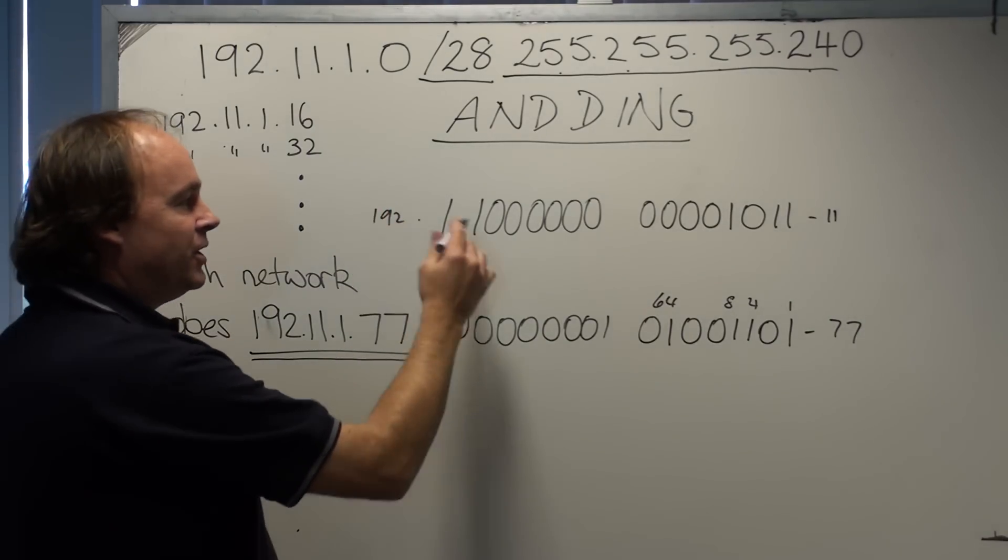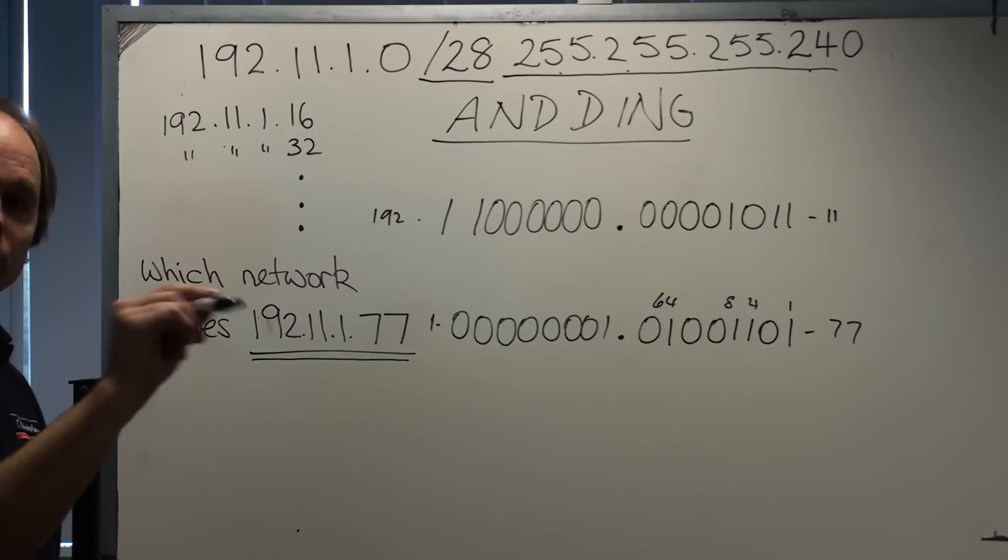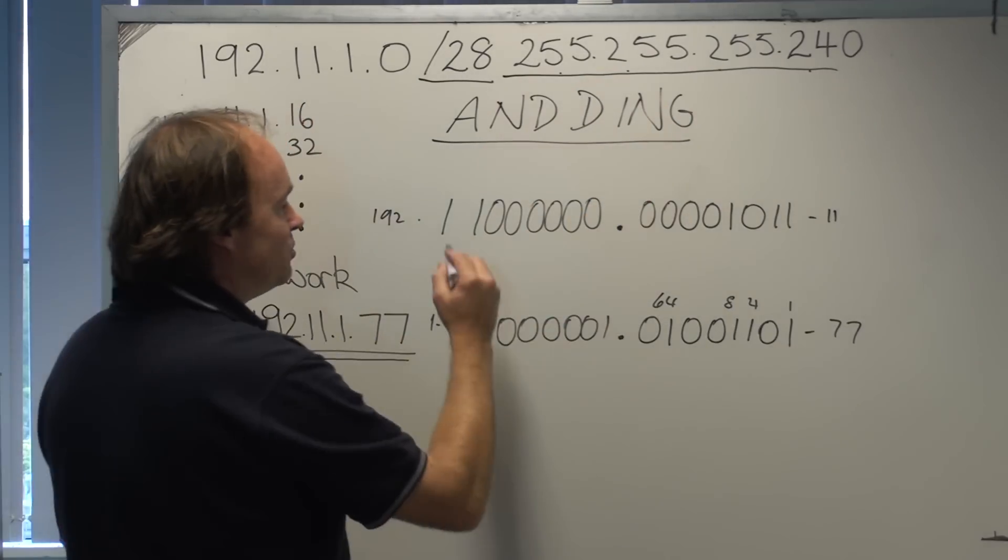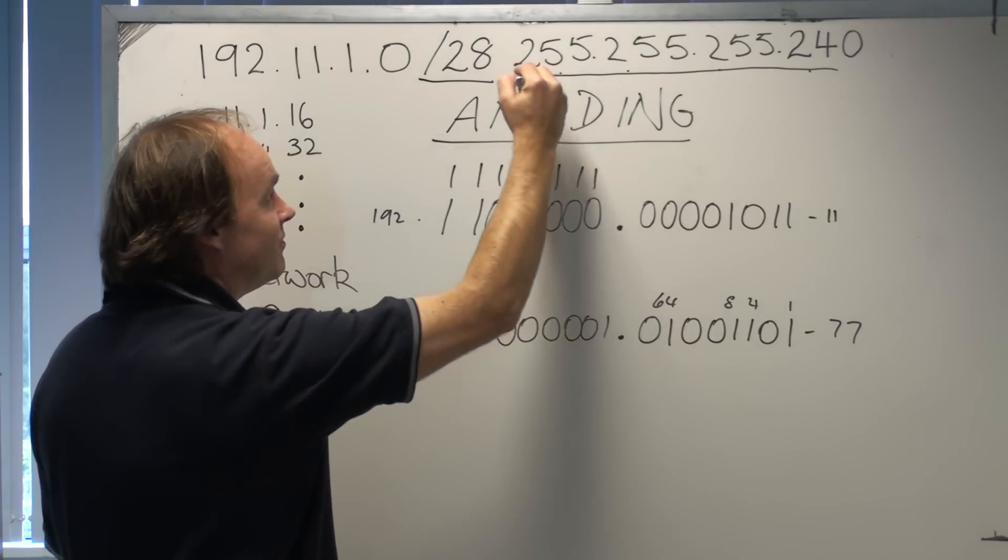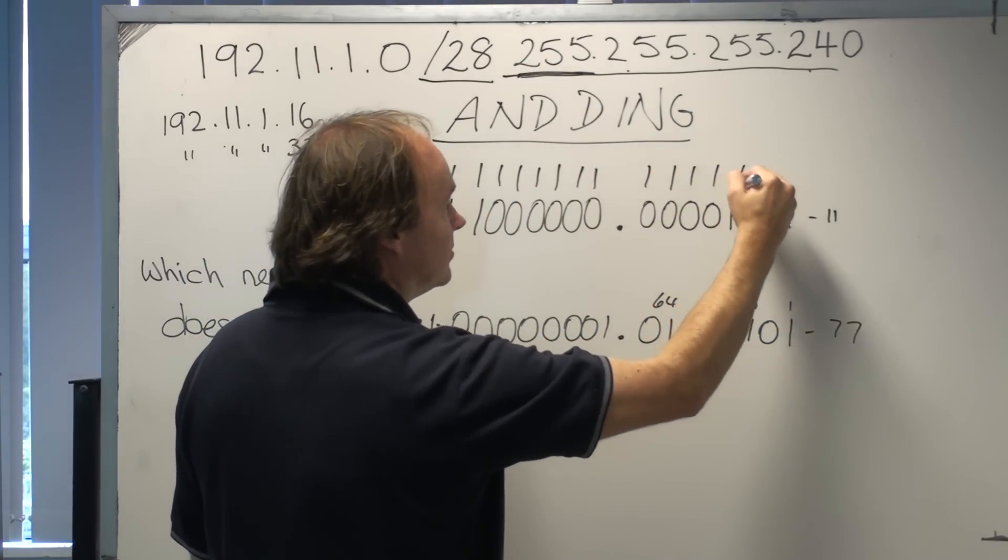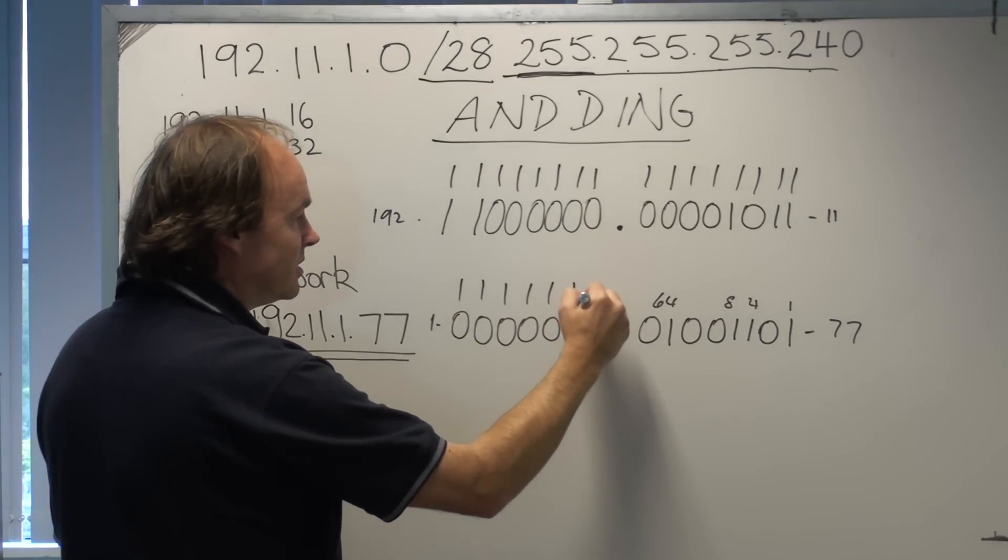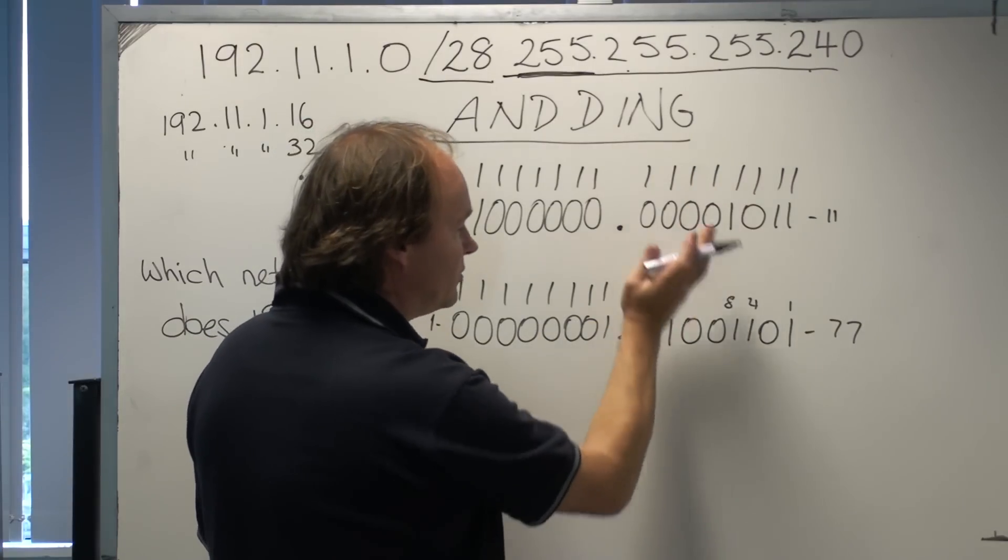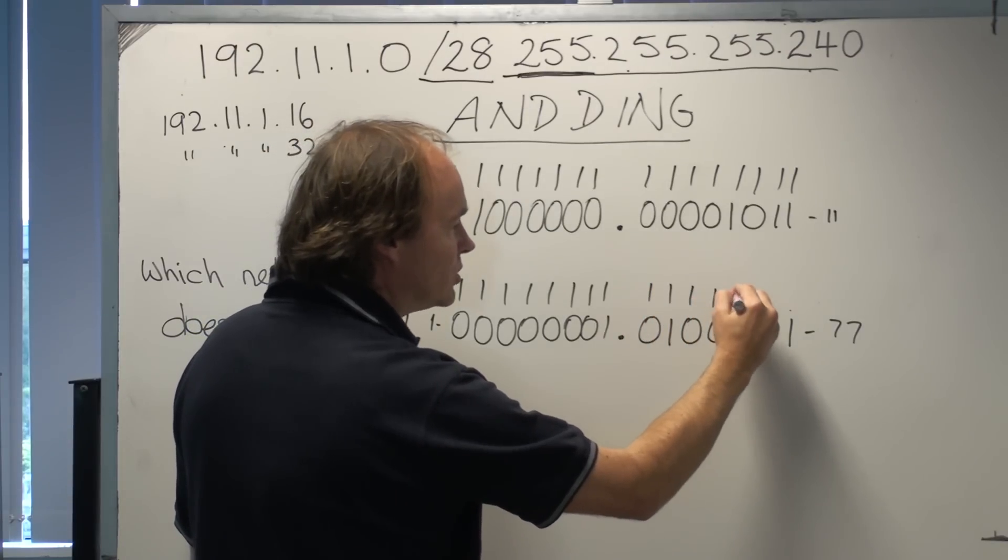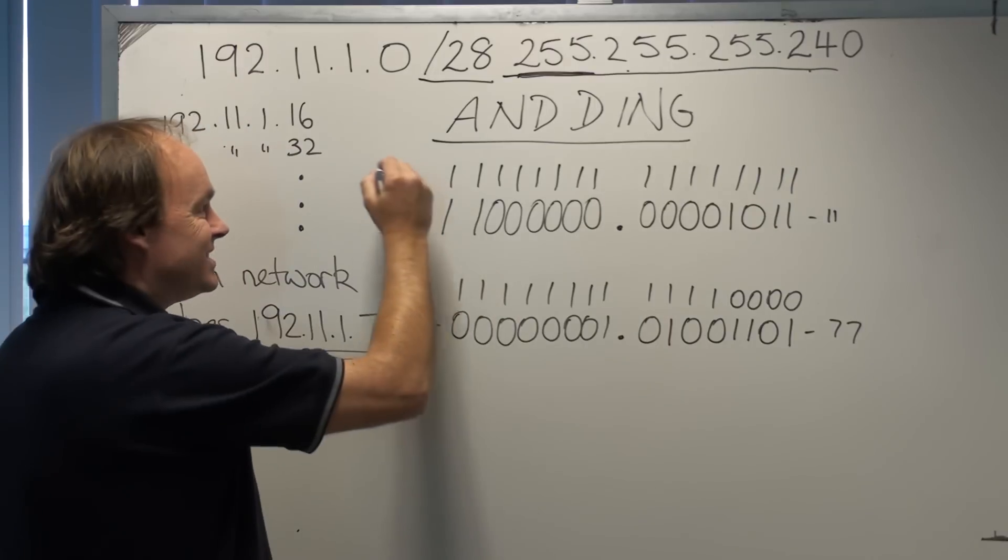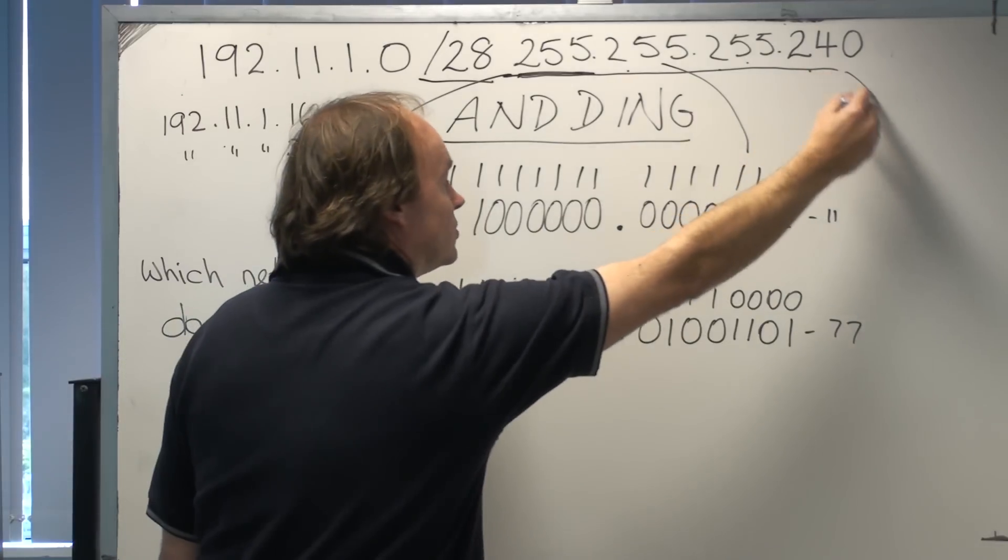Then we see that the router needs to AND each of these octets with the mask. That's the only way it can work out the network it needs to switch the packet to. Using this mask, we understand that 255 is ones in all positions. So that's the first 255, the next 255 goes here, the third 255 references the third octet. And then there's 240. Now with 240, it's not going to be all ones. It's going to be 128, 64, 32 and 16, which adds up to 240.